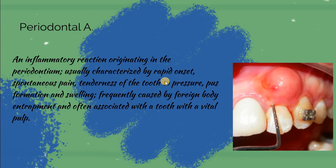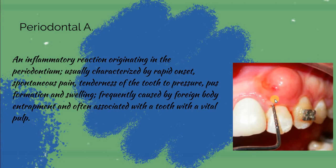We have periodontal abscesses, which are inflammatory reactions originating from the periodontium. The tooth is vital in a periodontal abscess. It is usually characterized by rapid onset, spontaneous pain, tenderness, percussion sensitivity, and pus formation and swelling. Most of the time, it is caused by foreign bodies and often associated with a vital pulp.